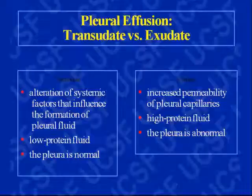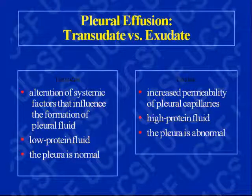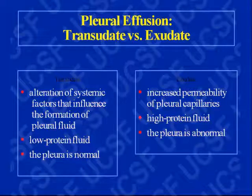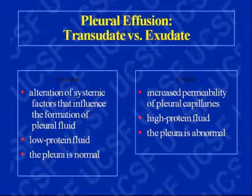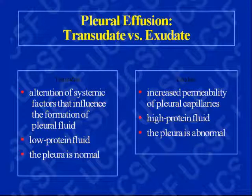In characterizing pleural effusions, there are two types to consider: transudates and exudates. A transudate results from alteration of systemic factors that influence the formation of pleural fluid — the fluid is low in protein and the pleura itself is normal, so this type does not reflect pleural disease. An exudate results from increased permeability of pleural capillaries — the fluid is high in protein and the pleura is abnormal, so this type results from pleural disease.